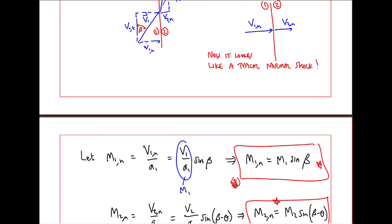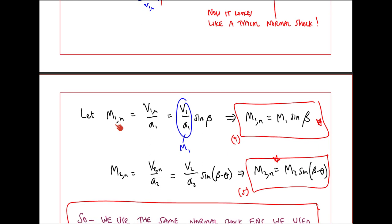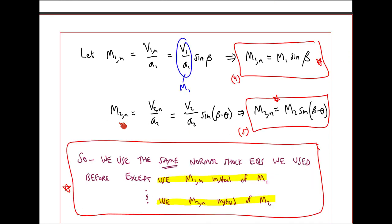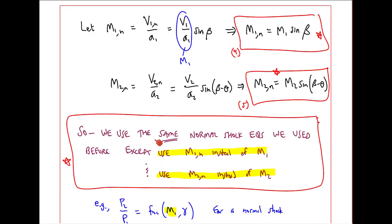Let's write some equations for M1N and M2N. M1N, the normal component of Mach number, is V1N over A1, which is V1 sine beta over A1. But this is M1, so M1N is M1 sine beta. I'll call that equation 4. So M2N is similar, V2N over A2, or V2 sine beta minus theta over A2. So M2N is M2 sine beta minus theta. So the bottom line is that we can use the same normal shock equations that we used before, except with M1N instead of M1, and M2N instead of M2.